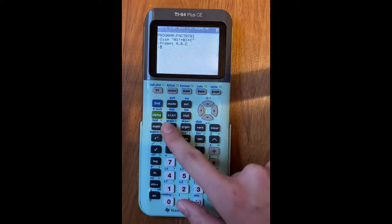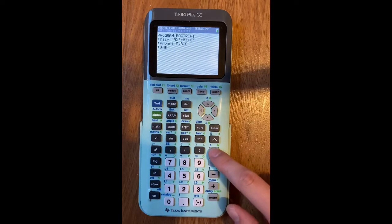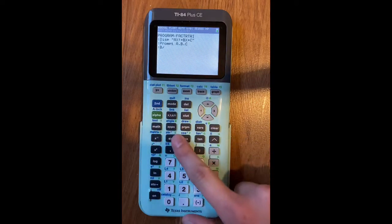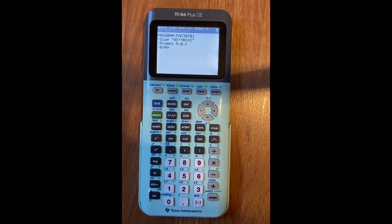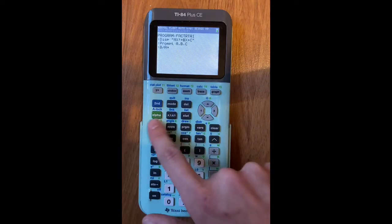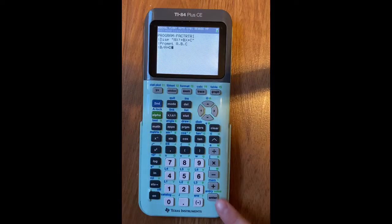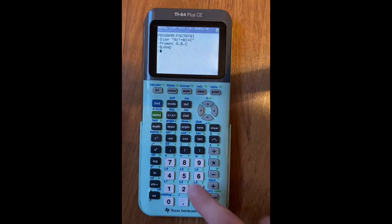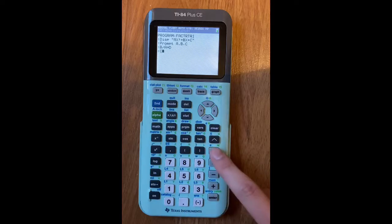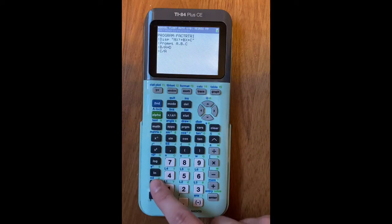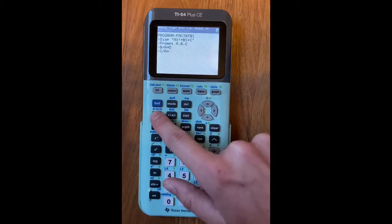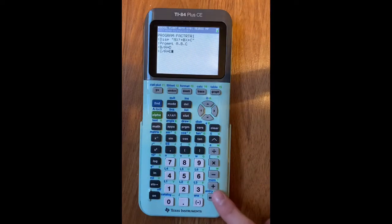Then you are going to do B divided by A, stores, which is this little arrow, stores as D, and then press enter. Then you will do C divided by A, stores as E, and press enter.